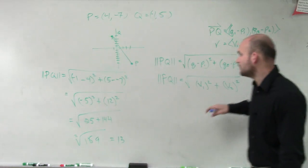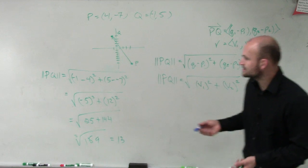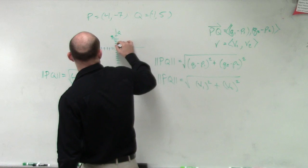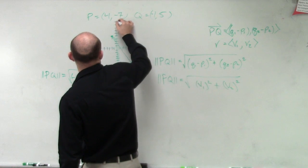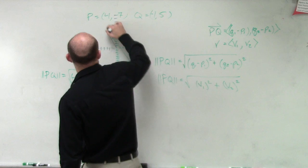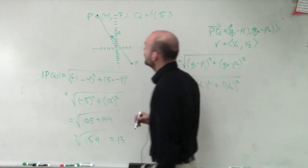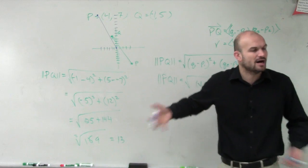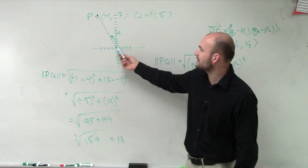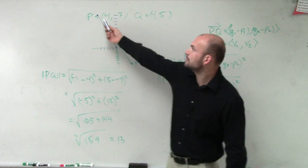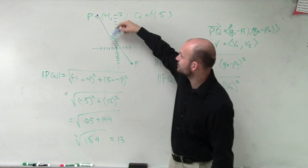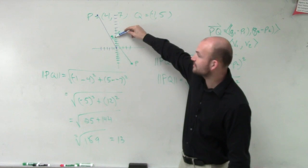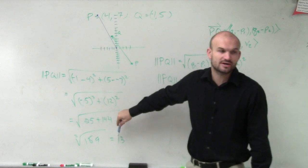And we know that also if we wanted to find what V1 and V2 were, you can see this would be negative 5, 12. And that would be your component form of your vector. Notice how the component form of the vector starts at 0, 0, goes to negative 5, 12. But the distance from your initial point to your terminal point of your component form or of your directional line is still going to have a magnitude or distance of 13.